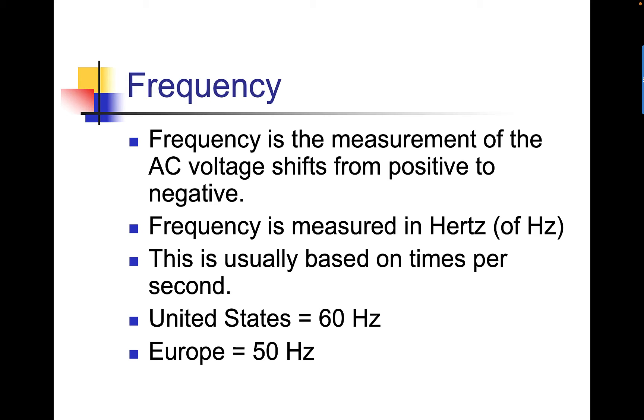Frequency is the measurement of the AC voltage shifts from positive to negative. Frequency is measured in hertz, Hz. It's usually based on the number of times per second. In the United States, basically, North America, this is 60 hertz.